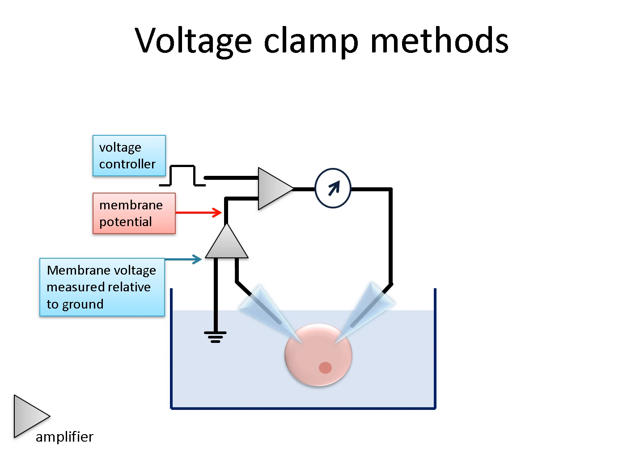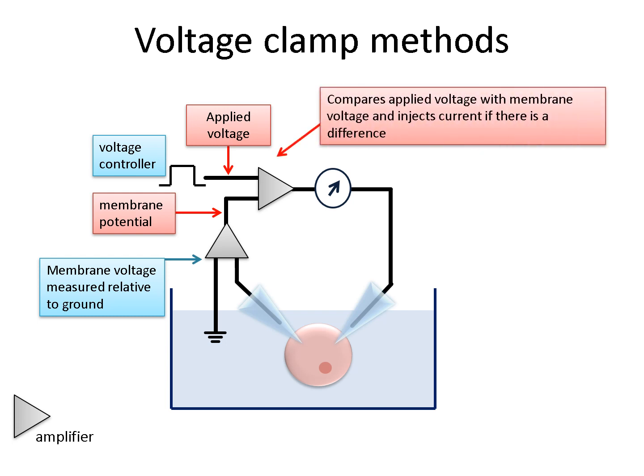The output of the first amplifier is then fed into a second amplifier, which is used to clamp the membrane potential. A voltage controller is connected to a second input on the amplifier to control the voltage level. To understand how it controls voltage, you need to have an appreciation of how an amplifier works. There are two inputs and one output from the amplifier, and it basically works by continually comparing the two inputs and sending out a current that is proportional in amplitude to the difference between the two inputs. So when the inputs are equal, the output from the amplifier is zero. But the output increases or decreases as soon as any difference between the inputs is detected. In this way, the amplifier compares the voltage from the cell membrane to the voltage from the voltage controller and adjusts its output depending on any difference between them.